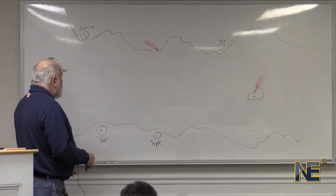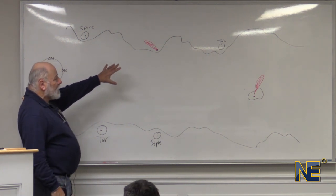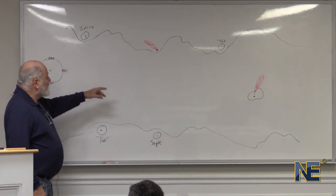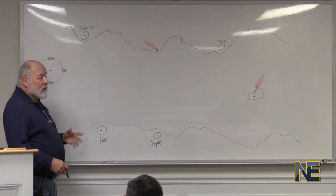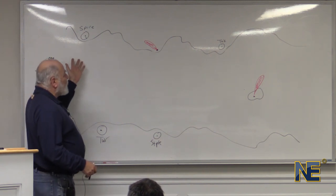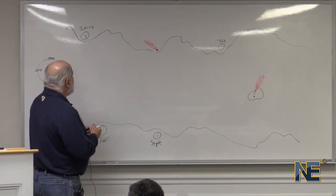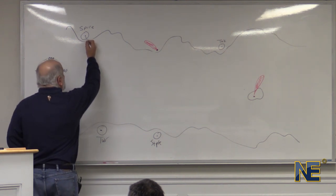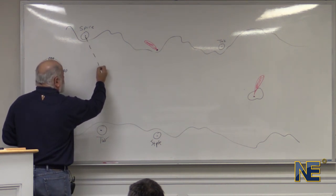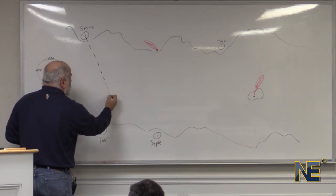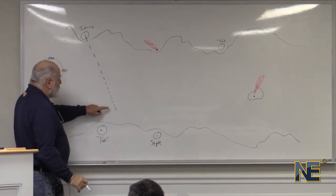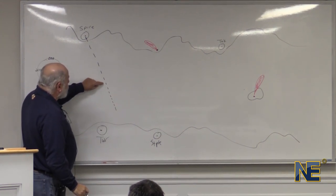All it is is a matter of picking something in the landscape around you. We'll take this spire for example and if we knew that that spire was 350 degrees away from where we were, we can just merely draw a line on the chart 350 degrees and all we know is that we are somewhere on that line.